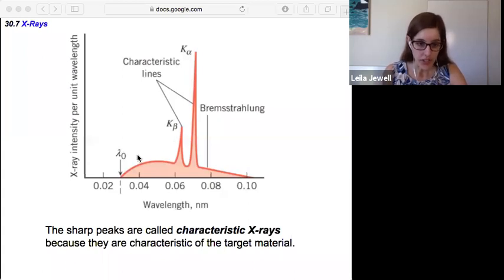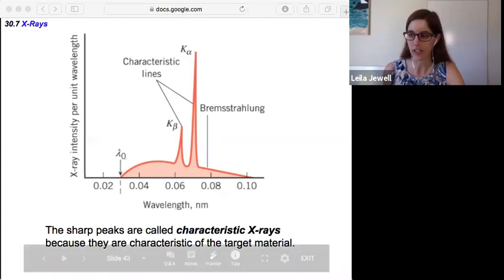The other thing to note here is this lambda sub naught. That's the cutoff wavelength, the minimum wavelength that we'll see. It's set just based upon, in the previous slide, the potential difference of how much you've accelerated those electrons, how fast they're moving. That determines how much energy the photon can have when it's given off.